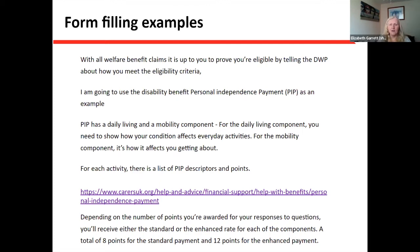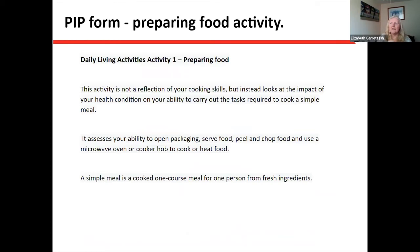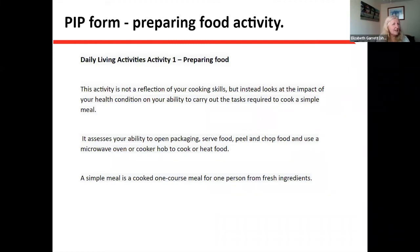On the PIP form there's a daily living activity all about preparing food. This activity is not a reflection of someone's cooking skills — it looks at the impact of the health condition or long-term disability on their ability to carry out the task of preparing and cooking a simple meal. What they're assessing includes someone's ability to open packaging, serve food, peel and chop food, and use a microwave, oven, cooker, or hob to cook or heat food. A simple meal is described as a cooked one-course meal for one person made from fresh ingredients.